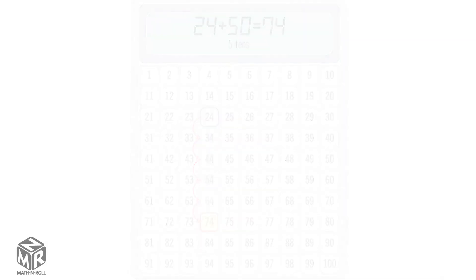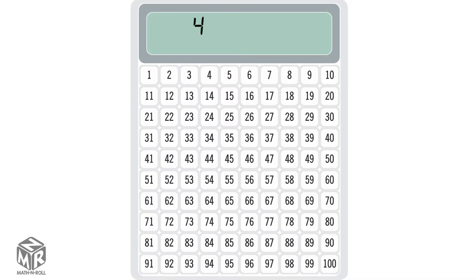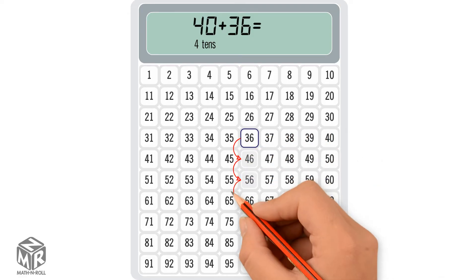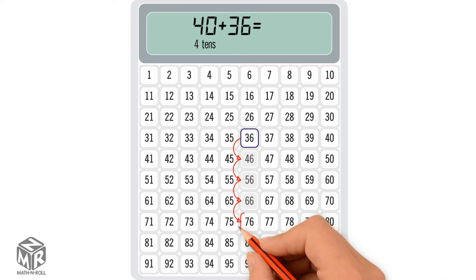Let's try another example. 40 plus 36. 40 is 4 tens, so we start at 36 and count 4 tens going down the column. We get 76, so 40 plus 36 equals 76.